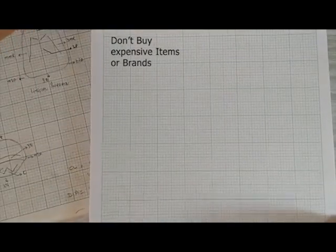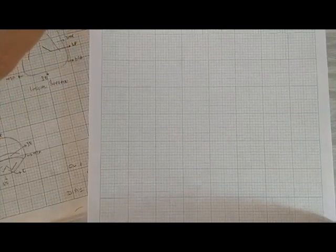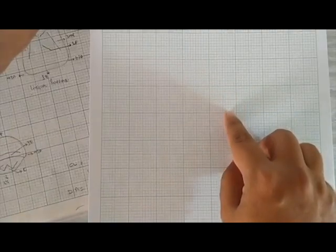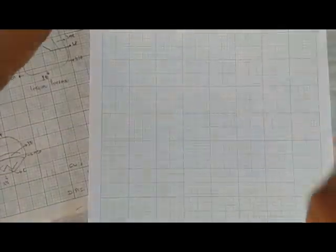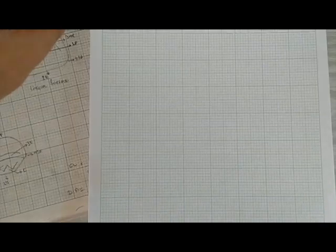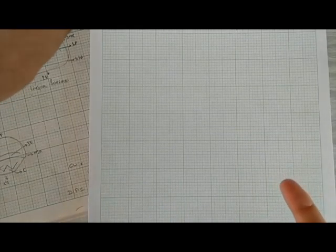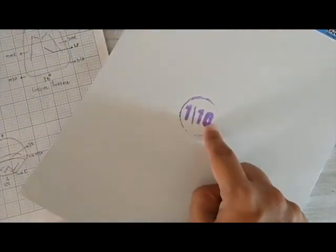In this graph paper, this graph paper is one upon 10. It means in one inch there will be 10 boxes. There are graph papers in which the boxes are very small and it makes the drawing very difficult. So it is written as one is to 10, it means in one inch there are 10 boxes.